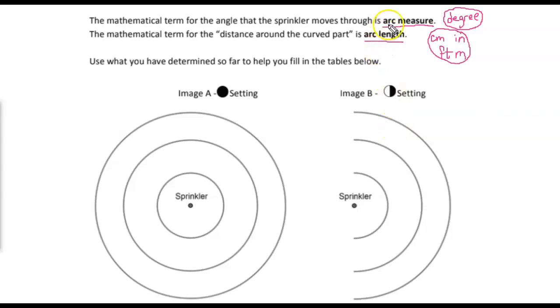If we want to find the arc's measure, that's based on an angle. But if we want to find the arc's length, that's if we stretched it out and put it up against a ruler, how long is that piece? So those are two different things.